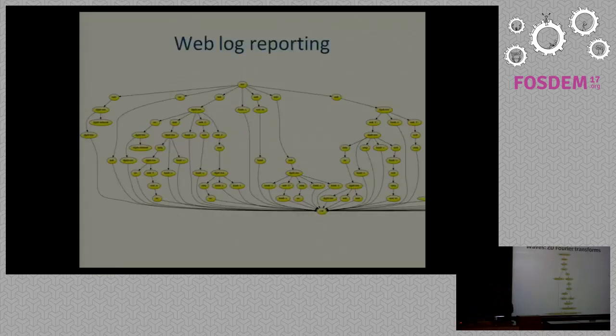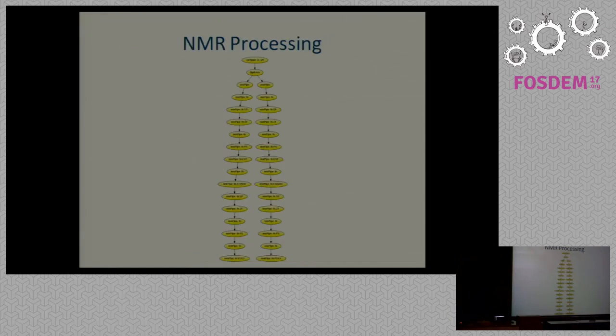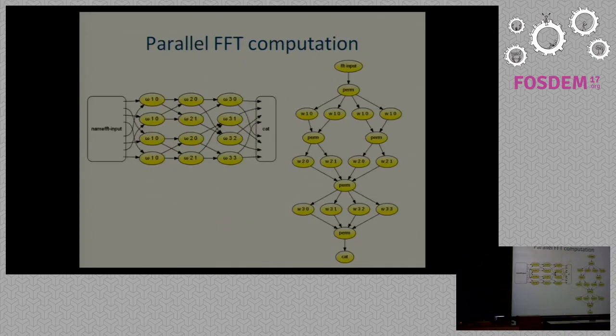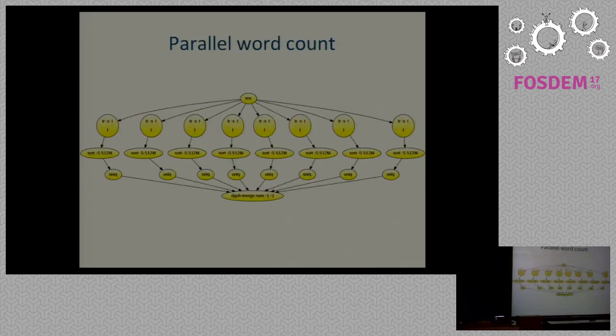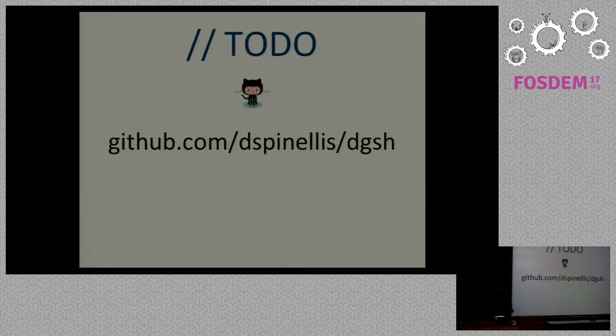We can do weblog reporting. We can do 2D Fourier transforms. NMR processing with complete tools that no one wrote for this purpose. Parallel FFT computation. Parallel word count so you can do map reduce just by using this tool. You can find git committer activity over time and so on.